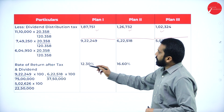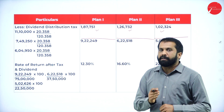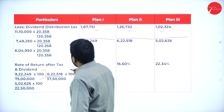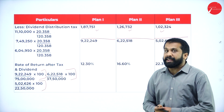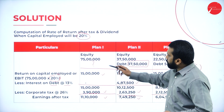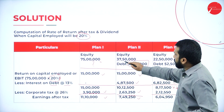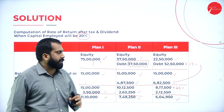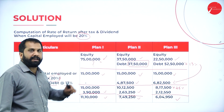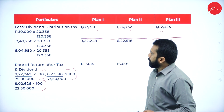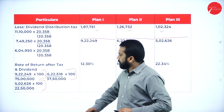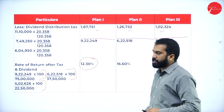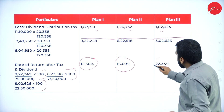Once done with this, calculate the rate of return after tax and dividend. Divide each result by the equity value. Option 1: divide by 75,00,000. Option 2: divide by 37,50,000. Option 3: divide by 22,50,000. After this calculation, you get 12.30, 16.60, and 22.34 respectively.